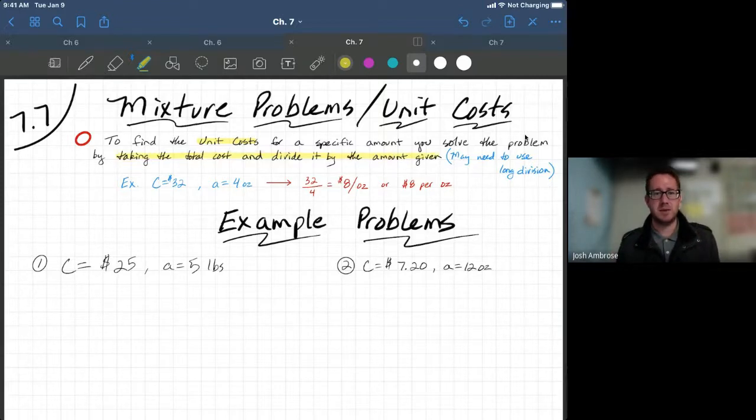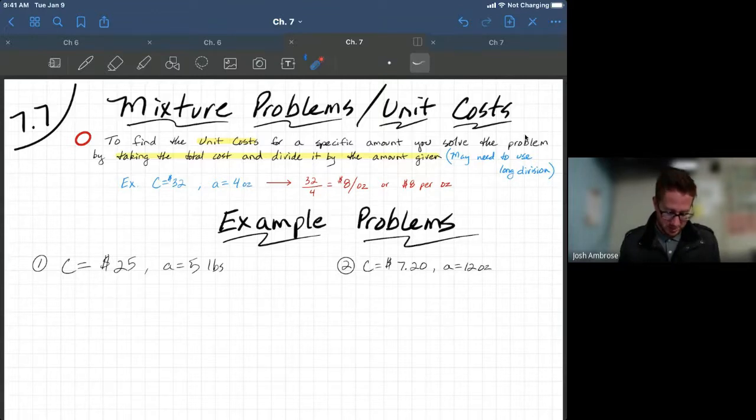Take the total cost, which the total cost is always going to be given with a capital C, divide it by the amount that you're working with, which is a lowercase a. That's the amount. So, we're talking capital C divided by lowercase a. That's the simple equation that we're using.